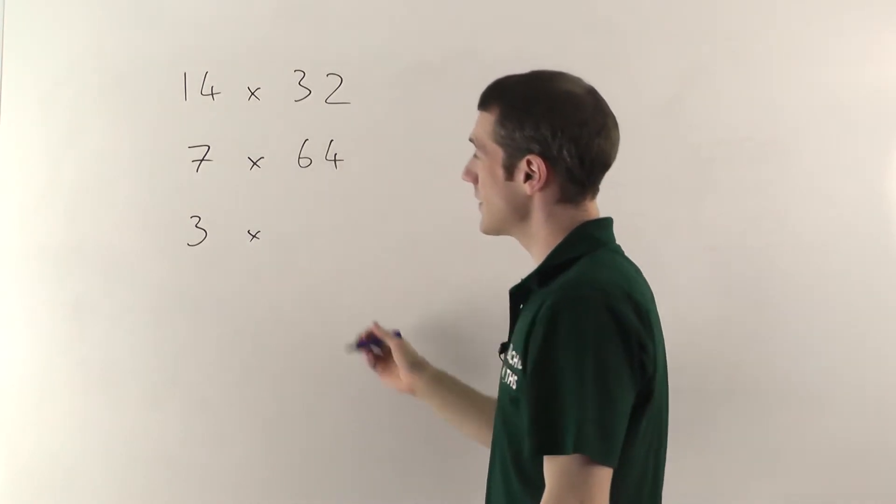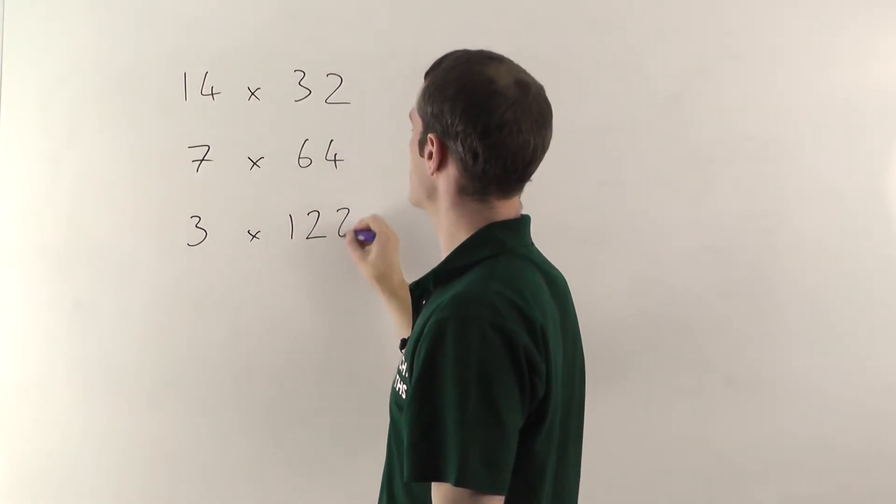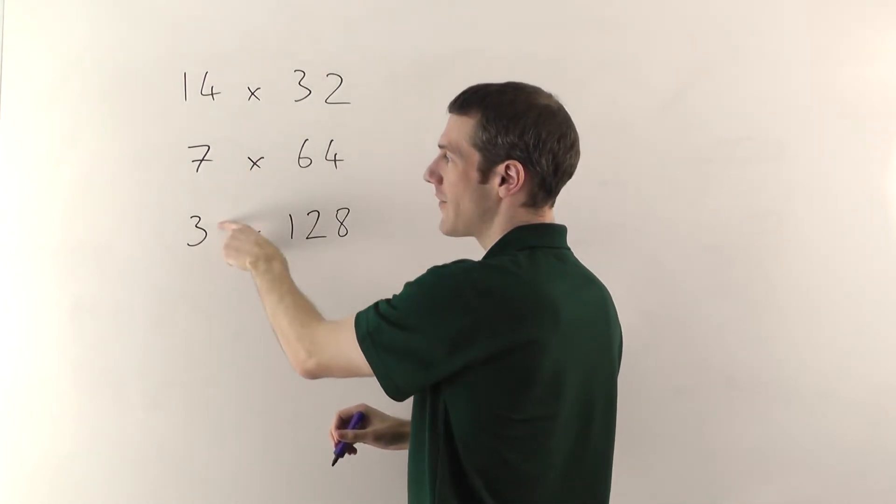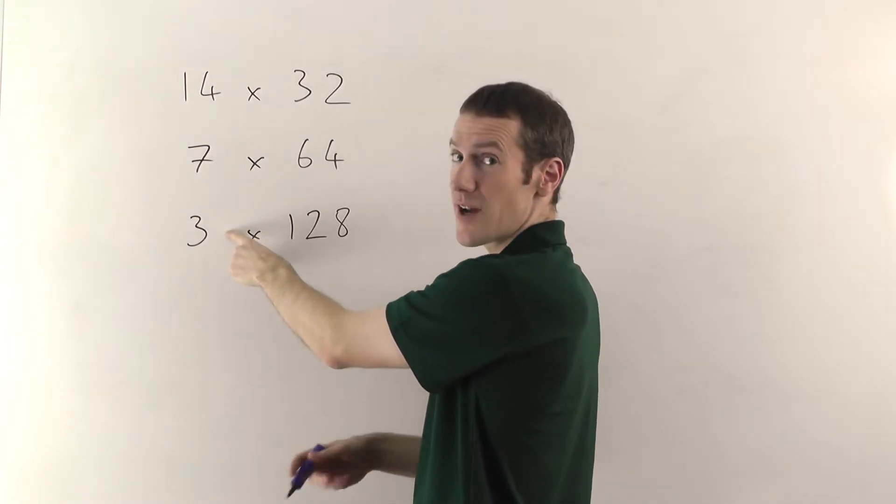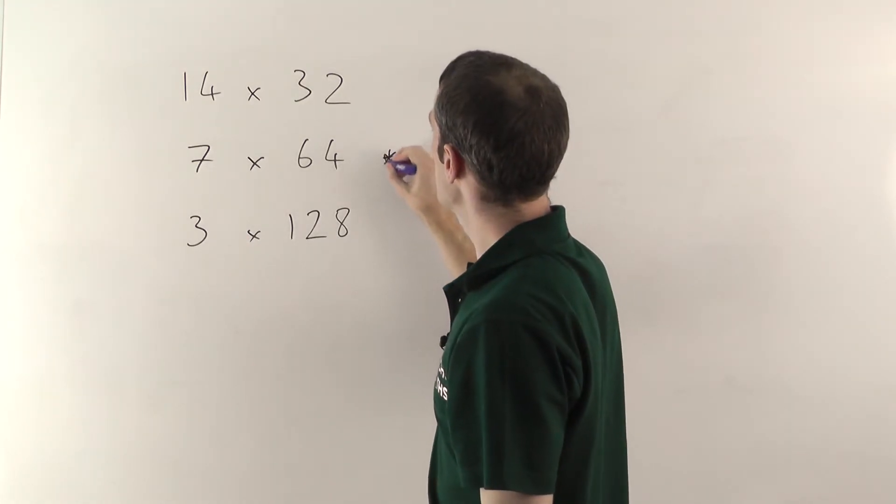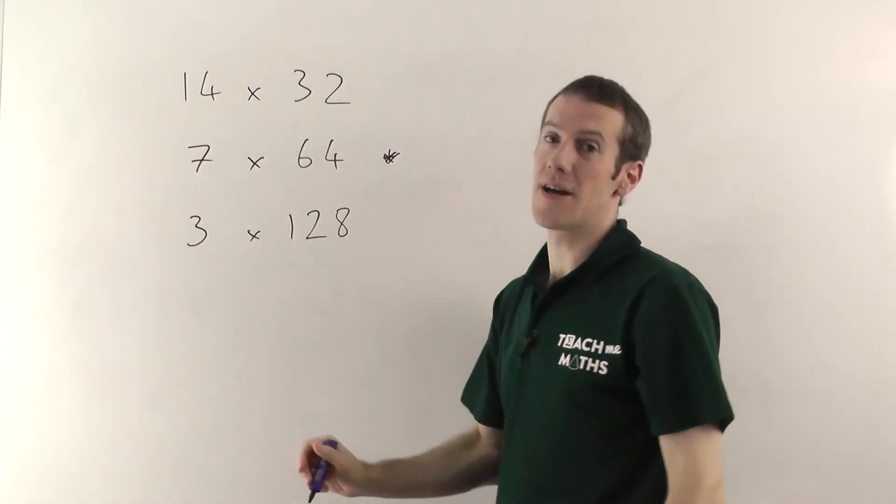If you double 64, that's going to give you 128. Now whenever you round, whenever you have to throw the half away, so if I'm going from the 7 to the 3, I had to throw away the extra half, you always have to put an asterisk next to the level where you rounded down. OK?